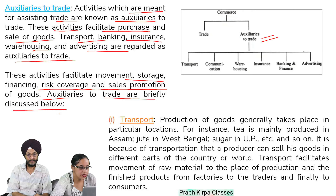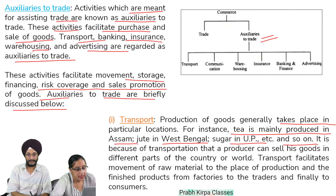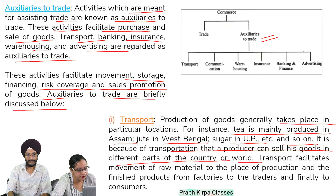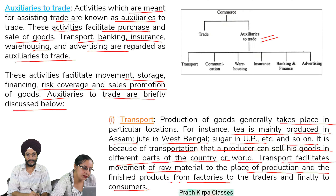Number 1, transport: production of goods generally takes place in particular locations. For instance, tea is mainly produced in Assam, jute in West Bengal, sugar in UP, etc. It is because of transportation that a producer can sell his goods in different parts of the country or world. Transport facilitates movement of raw material to the places of production and the finished products from factories to the traders and finally to consumers.